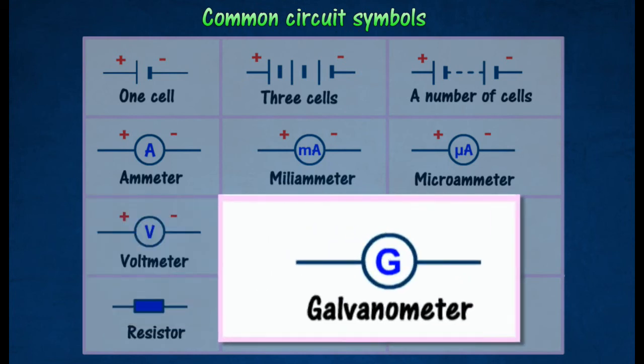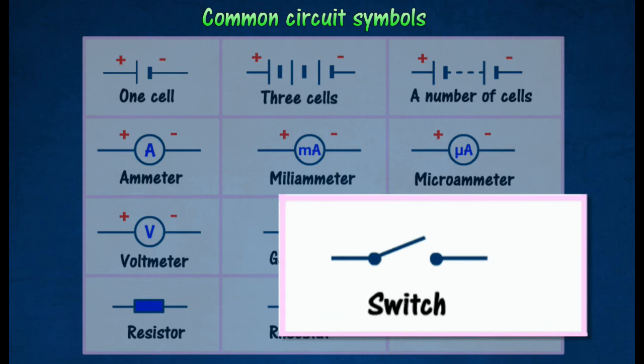A galvanometer is an instrument used to detect, measure, and determine the direction of small electric currents. A switch is used to complete or break the current flows in the circuit.